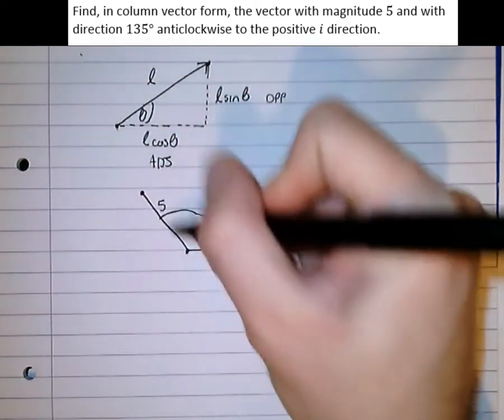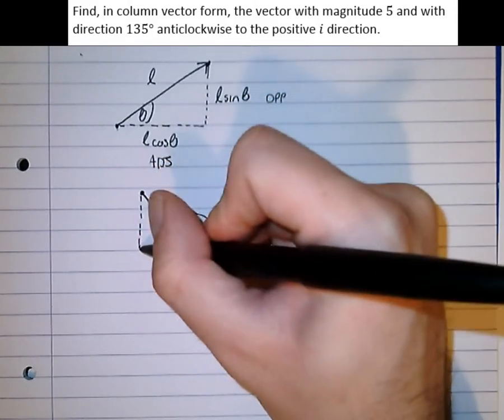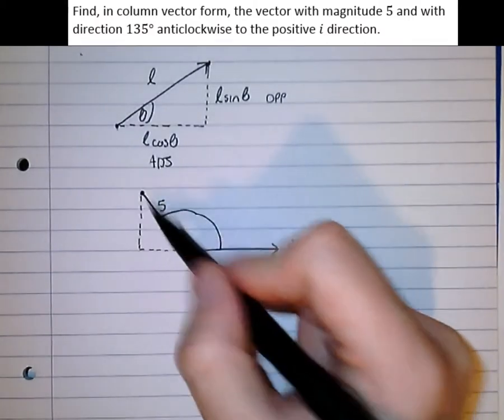So let's try and turn this into a right angle triangle, so we can use the splitting of components like we did before. So we've got that there, length 5.